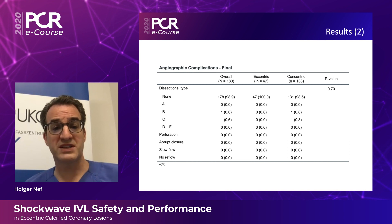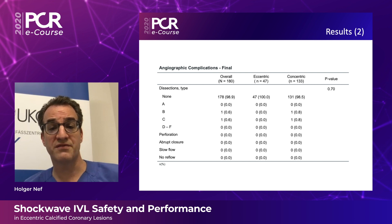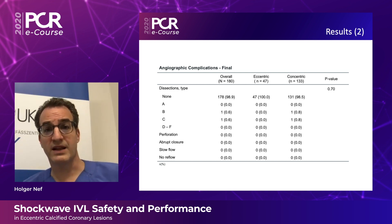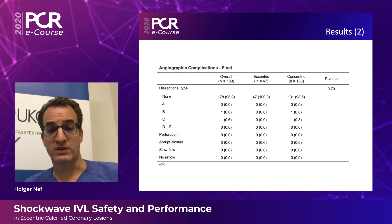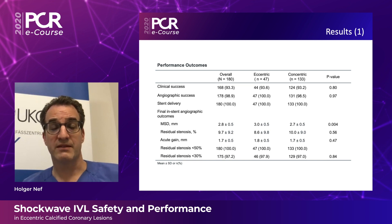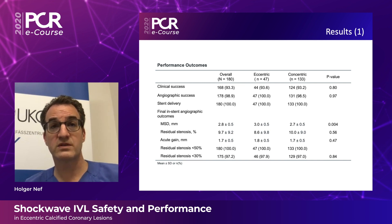Looking at the results, from a safety perspective, there was no perforation at all. We had no closure, slow flow, or no-reflow events in both groups — either in the eccentric as well as in the concentric group — and, most importantly, no rates of flow-limiting dissections. Looking at the final acute gain and percent of residual stenosis, both were similar between the two groups, and the final minimum stent diameter was significantly greater in the eccentric versus concentric lesions.